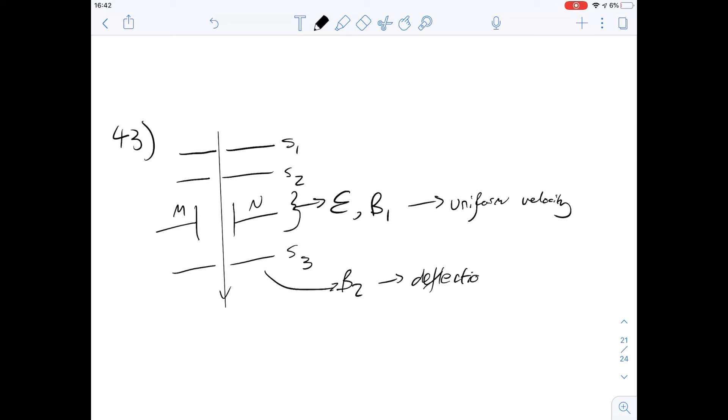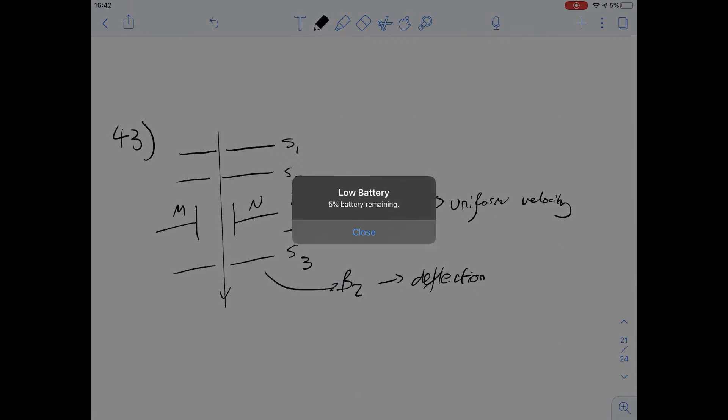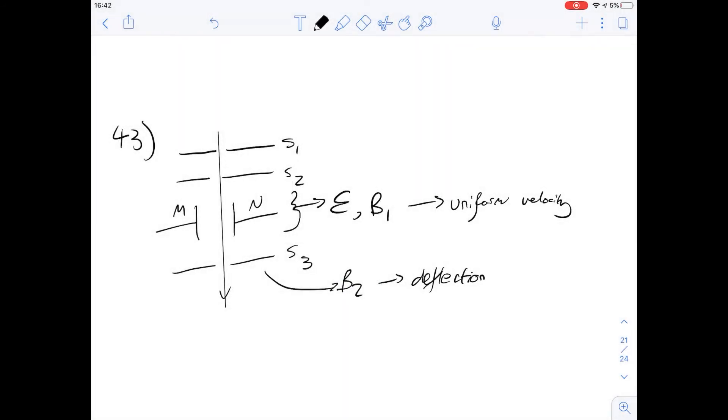So what changes if you change the charge on the particles that are passing through this? Well, they're going to deflect in the opposite direction, so if you're going to reverse one of them it has to be the deflection. The other thing you could do of course is to look at how you could change the uniform velocity and make sure that they follow a certain path beforehand.